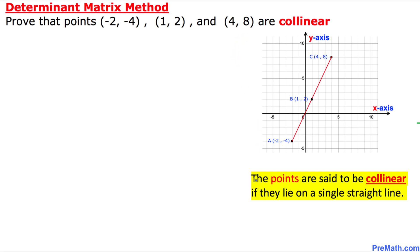And one more thing, the points are said to be collinear if they lie on a single straight line.